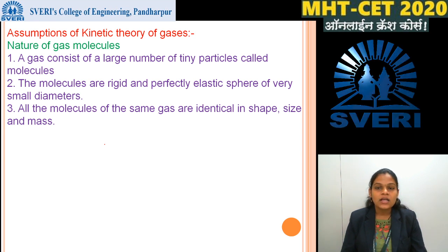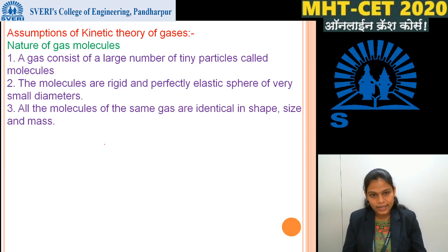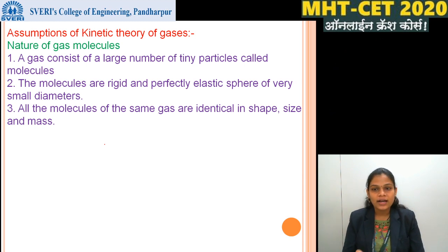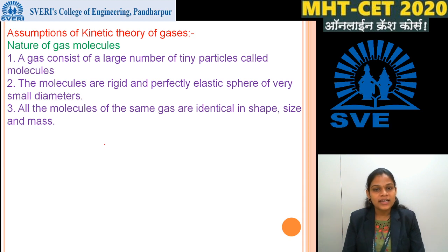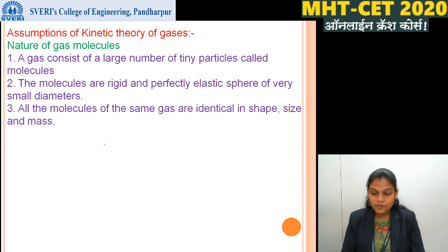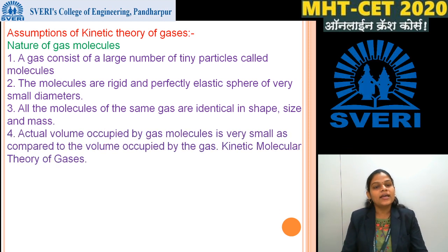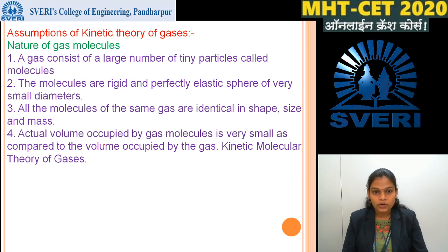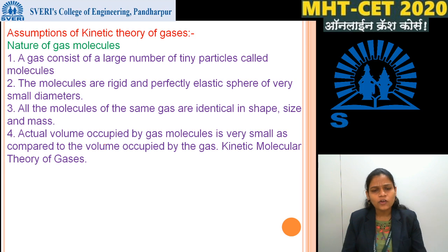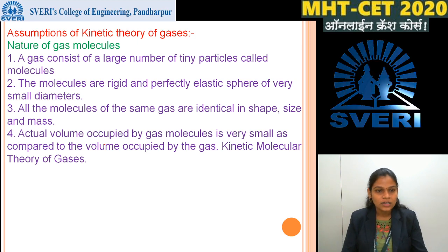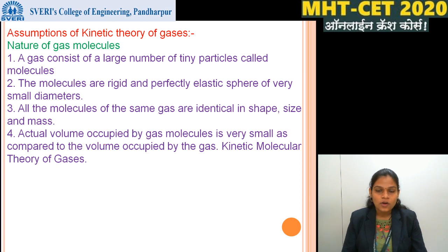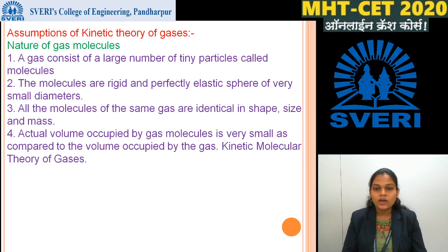Third assumption: all molecules of the same gas are identical in shape, size and mass. For a given gas like oxygen, every molecule is identical in shape, size and mass. Fourth assumption: the actual volume occupied by the gas molecule is very small as compared to the total volume occupied by the gas.